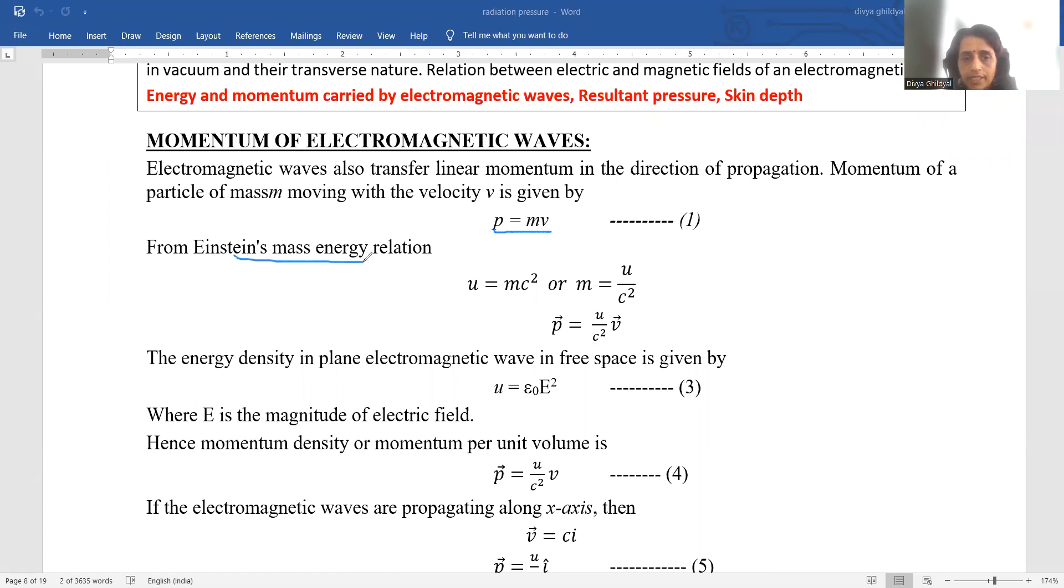From Einstein's mass energy relation, the energy which I have written here as u is equal to m c square. M is mass of particles. See the velocity of light mathematically 3 into 10 to the power of 8 meter per second.